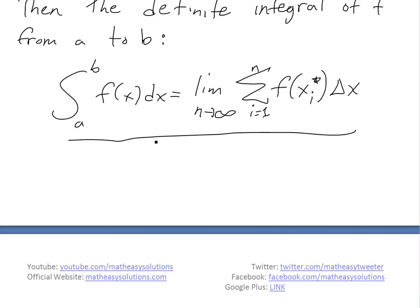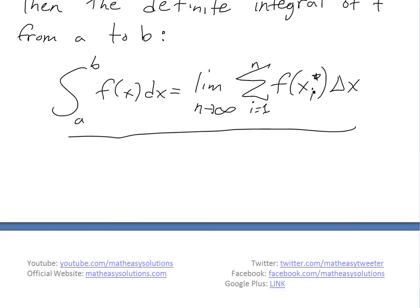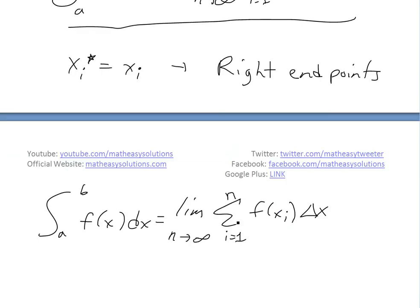So now, just some minor notes here. If we chose this x_i* to be the endpoint, so if x_i* is equal to x_i, because these are just the endpoint, the right endpoints, then it's just going to be this limit below here. All we do is replace the x_i* with x_i, which is the right endpoints here.